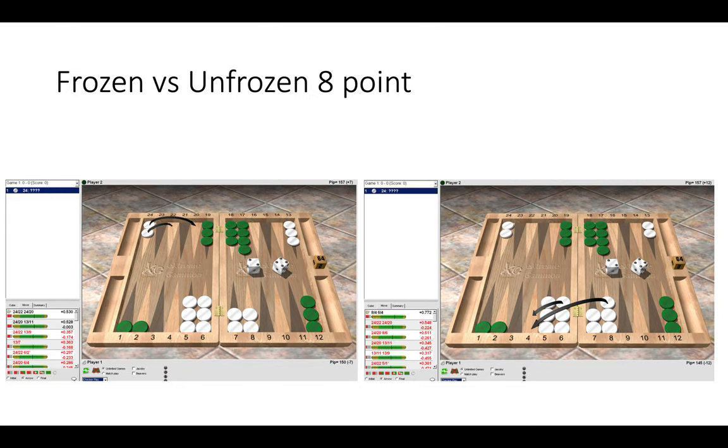So on the left, 4-2, it's too risky to make the 4-point because the 8-point is frozen. So it's simply better to play 2 checkers up from 24. Making the 4-point in that scenario and stripping the 8-point further so a blot is there to shoot at is not even in the top moves. So it's a big mistake to do that.